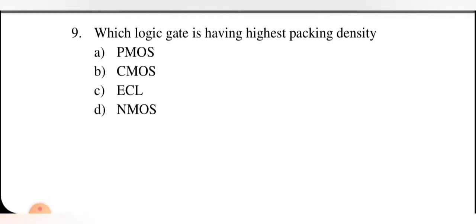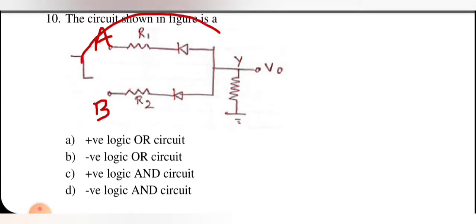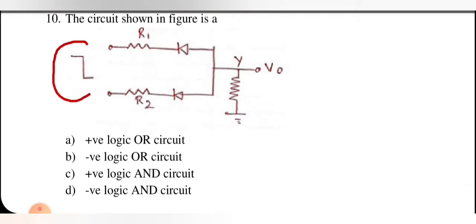Which logic gate has the highest packing density? Options are PMOS, CMOS, ECL, and NMOS. The right option is NMOS. The circuit shown in the figure — looking at it, we have the same second question setup: if a diode is connected, A is applied to this input and B is applied here.